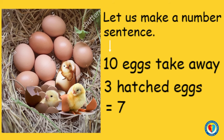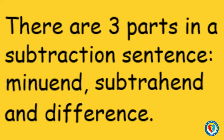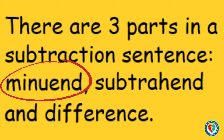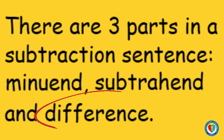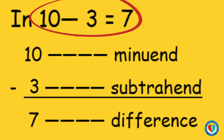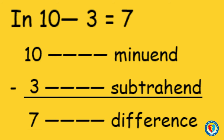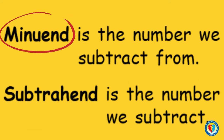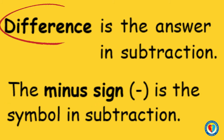How many eggs were left? Let us make a number sentence: ten eggs take away three hatched eggs equals seven. There are three parts in a subtraction sentence — we call them the minuend, subtrahend, and difference. Ten minus three equals seven. Ten is the minuend, three is the subtrahend, and seven is the difference. The minuend is the number we subtract from, the subtrahend is the number being subtracted, and the difference is the answer. In subtraction, the minus sign is the symbol used.